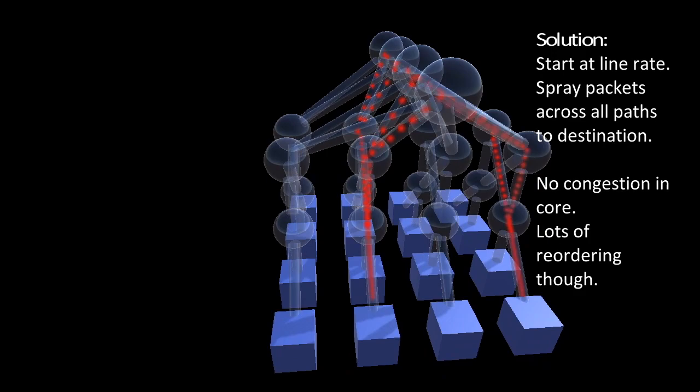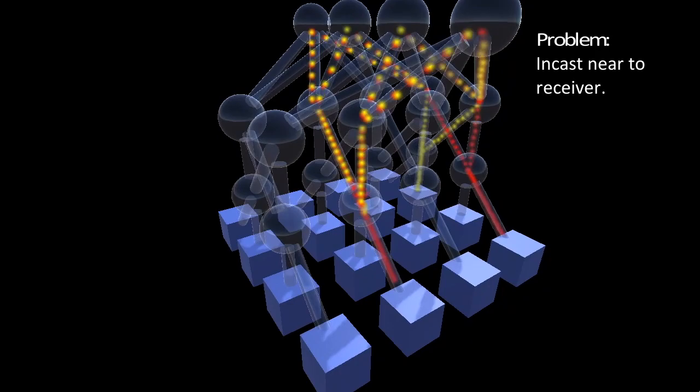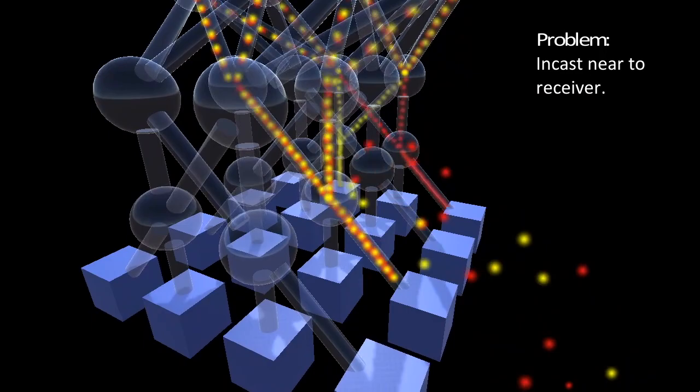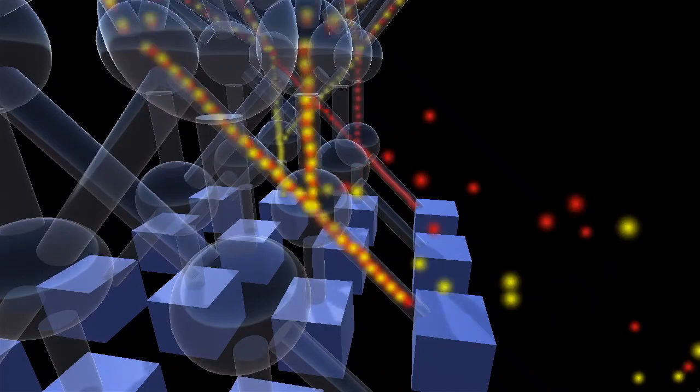The other problem you get is if flows are all sent to the same place. Incast can still cause big problems. Lots of loss happening there. Now, all these little sparks flying around may look pretty, but they don't really capture what's actually happening.